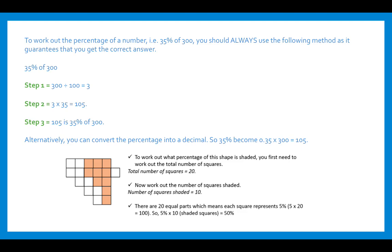To work out the percentage of a number — for example 35% of 300 — you should always use the following method which guarantees the correct answer. Step one: divide 300 by 100, which gives you 3. To divide by 100, simply move the decimal point two places to the left. Because you can't see the decimal point on a whole number, it sits at the very end — move it back two spaces. So you end up with 3, then multiply by the percentage you're looking for: 3 times 35 equals 105. So 105 is 35% of 300.